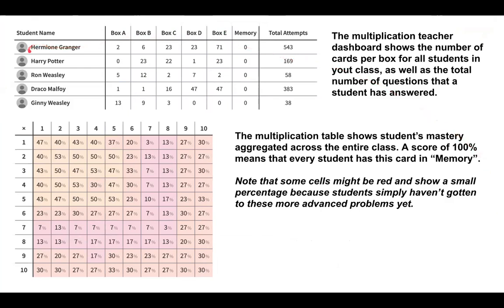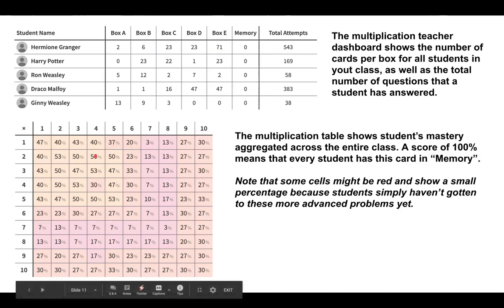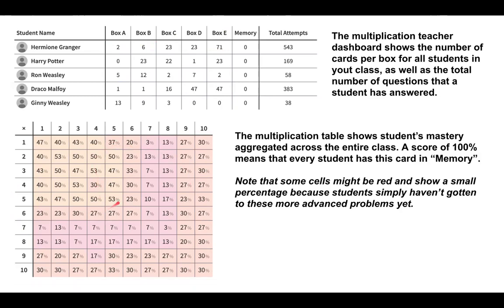For example, Hermione Granger has had 543 attempts. She still has 2 facts in Box A, 6 in Box B, and so on. The multiplication table view shows student mastery aggregated across the entire class. For instance, 53% of students have 5×5 in their memory. Some cells might be red because it's a small percentage of students, and it doesn't tell you that much about what your students do or don't know.